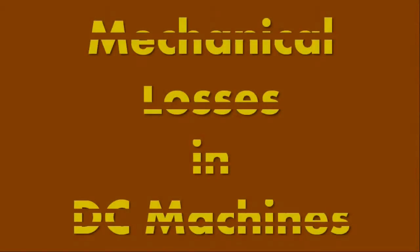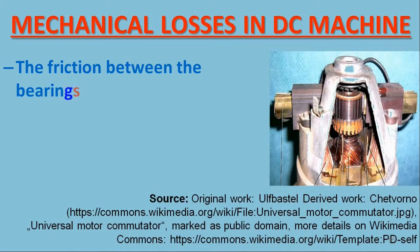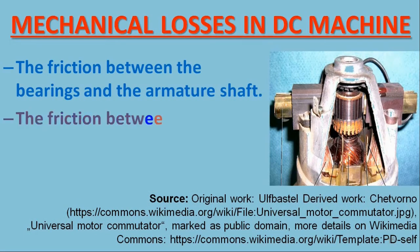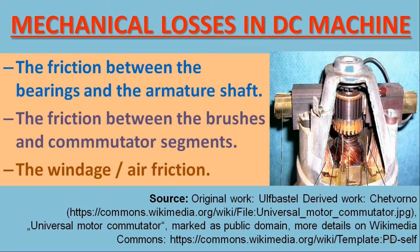Mechanical losses in DC machines: The mechanical losses in the DC machine are due to the friction between the bearings and the armature shaft, the friction between the brushes and commutator segments, and the windage or air friction. To reduce the friction loss caused by armature rotation, the bearings are usually lubricated. Note that the mechanical losses depend on the speed of the DC machine; however, for a given speed, these losses can be considered constant.